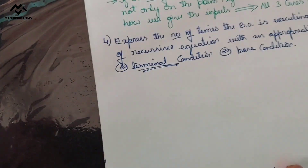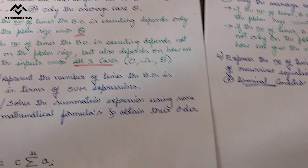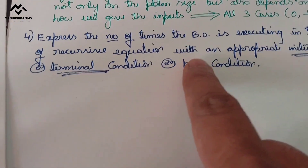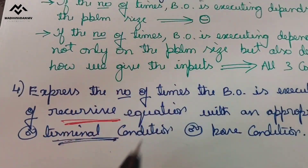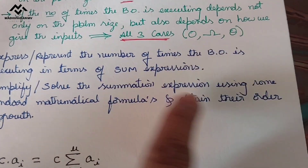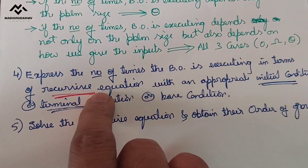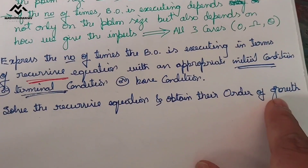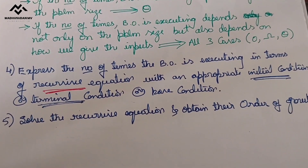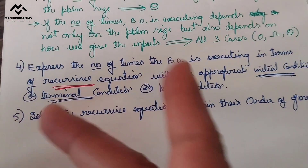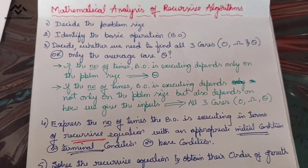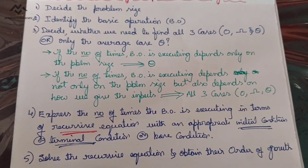The only difference between non-recursive and recursive analysis is in the fourth step: for non-recursive we express the count as a summation expression, but for recursive we express it as a recursive equation with an appropriate initial condition. In the fifth step, instead of solving a summation expression, we solve the recurrence equation and obtain the order of growth. These are the five steps for mathematically analyzing a recursive algorithm.